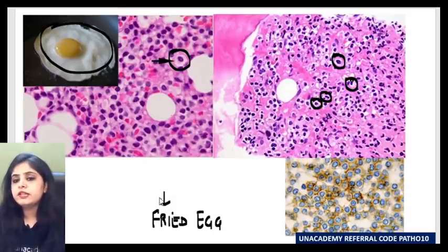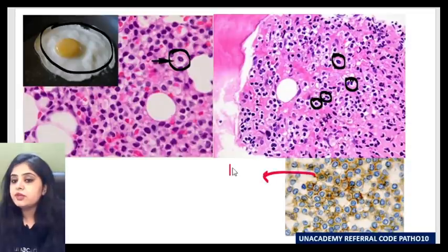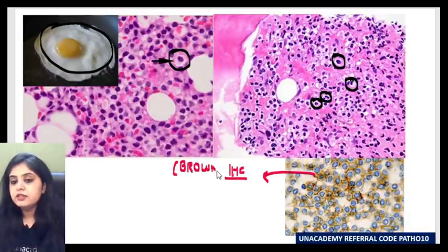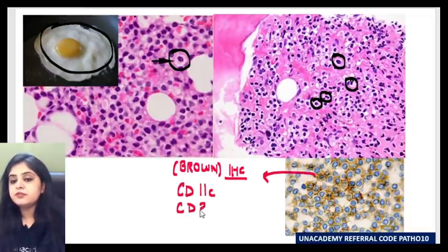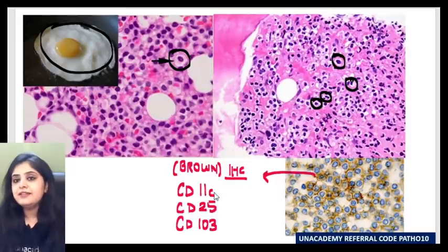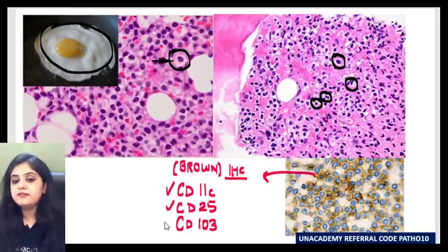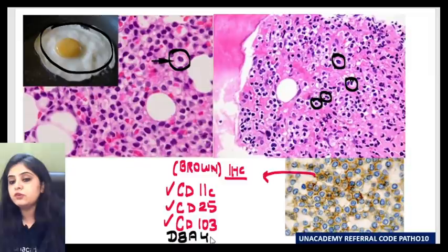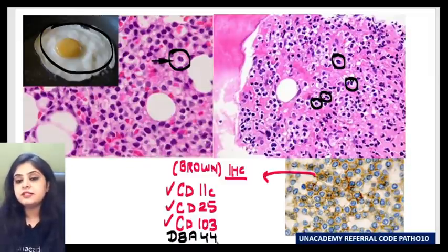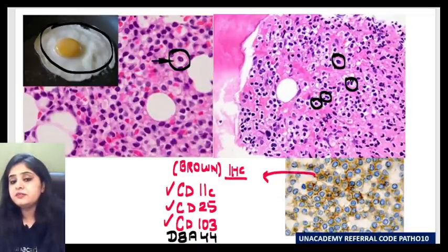What immunohistochemistry can be performed? You can see the brown color of IHC here. The stain can be positive for CD11c, CD25, and CD103 — one marker from each series: the tens, twenties, and hundreds. A newer marker that has also been identified for hairy cell leukemia is DBA44.